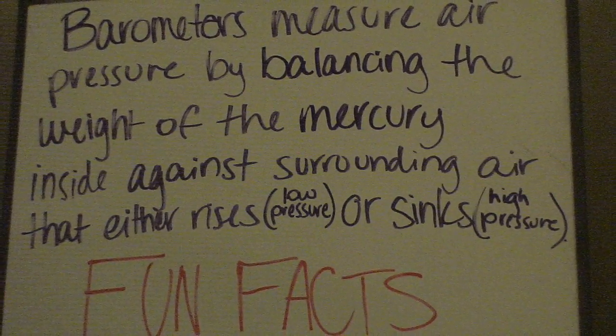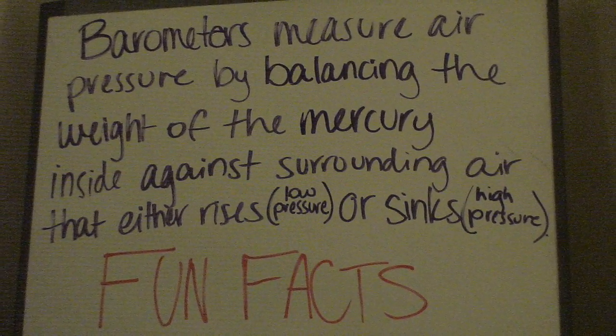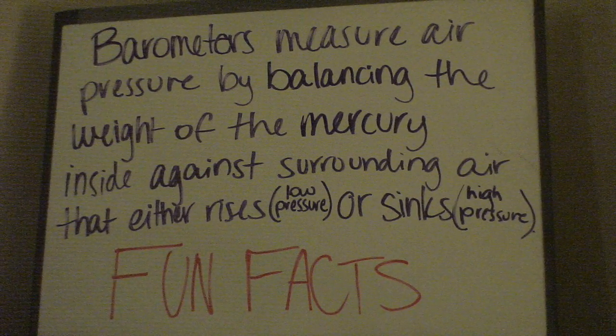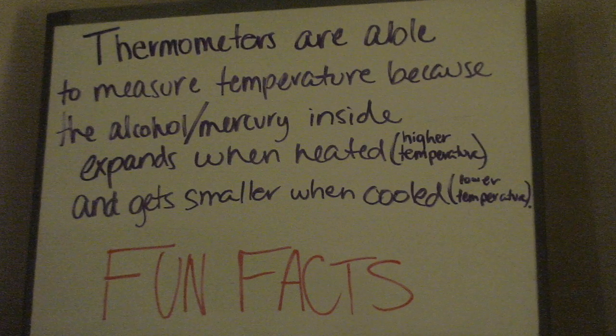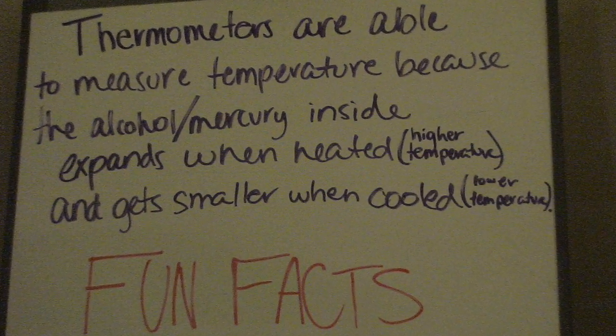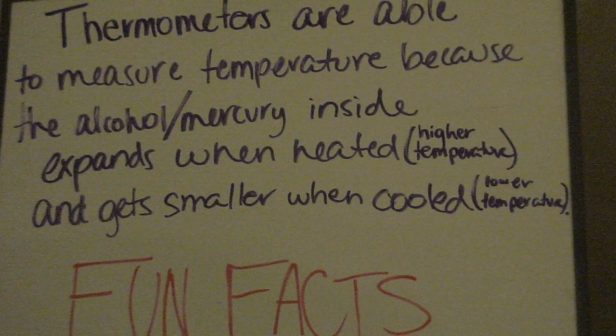Barometers measure air pressure by balancing the weight of the mercury inside against surrounding air that either rises, meaning there is low pressure, or sinks, meaning there is high pressure. Thermometers are able to measure temperature because the alcohol or mercury inside expands when heated, meaning there is a higher temperature, and gets smaller when cooled, meaning there is a lower temperature.